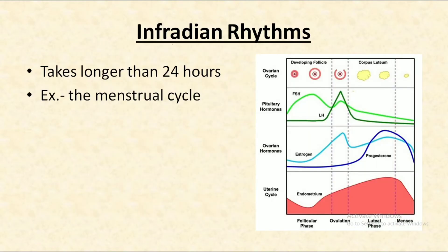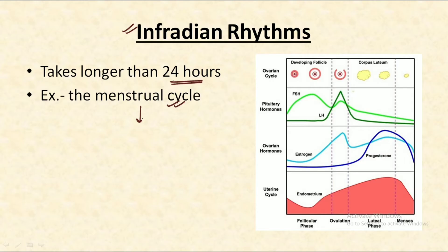Talking about the next type — infradian rhythms. These are rhythms that take usually longer than 24 hours to complete, and the most common example is the menstrual cycle. As we all know, the menstrual cycle usually operates every 28 days. Just remember that the menstrual cycle is the most common example of infradian rhythms, which take longer than 24 hours to complete.